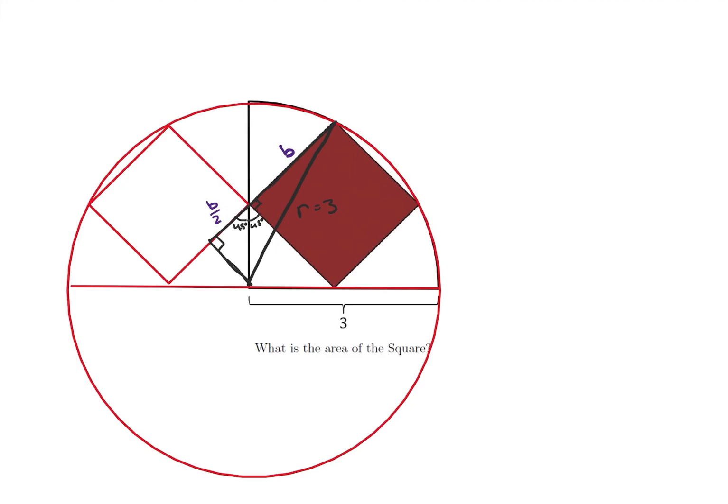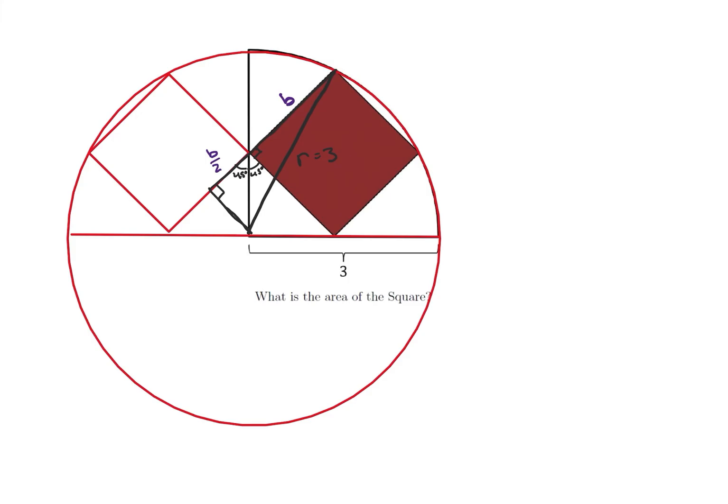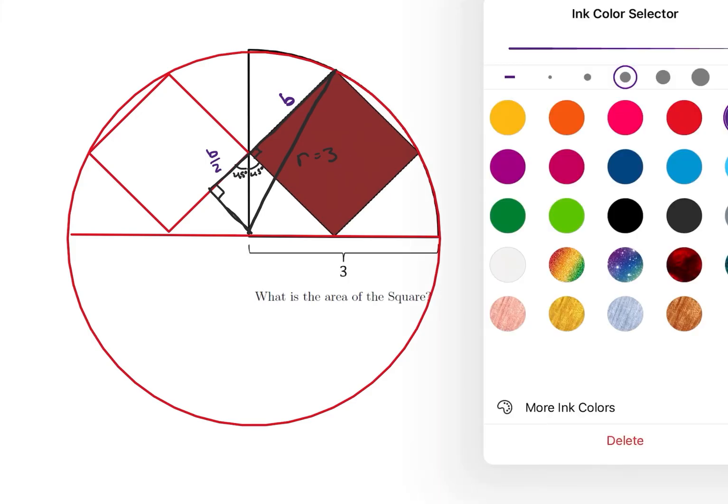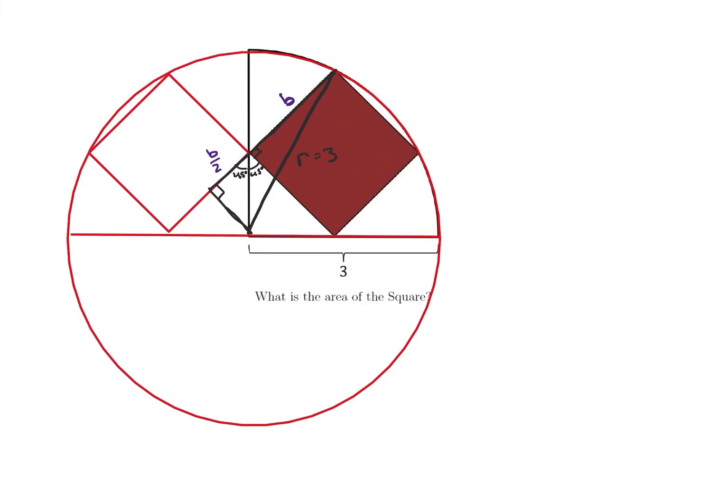So we're going to use the Pythagorean theorem here. And we're going to say, oh, and also, since this is a 45 degree angle here, this means this is a 45 degree angle here, which means that this side is also B over 2.